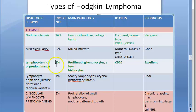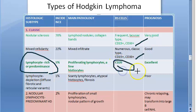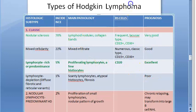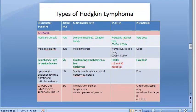Now looking at CD markers: the Reed-Sternberg cells are usually CD15 positive and CD30 positive. However, in the lymphocyte rich type, CD20 is positive while CD15 and CD30 are negative. So in lymphocyte rich, CD20 is positive and the other two are negative — that is an important distinction.